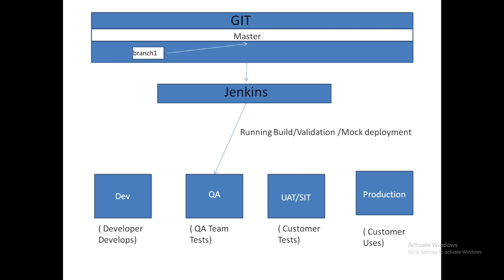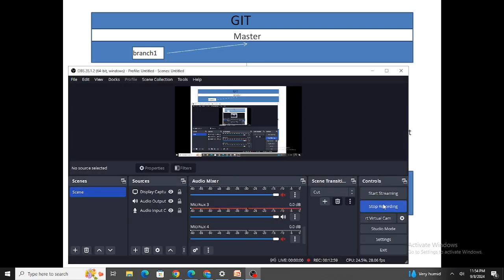This is how you build a deployment pipeline — what we call a CI/CD pipeline. This is how Git and Jenkins go hand-in-hand to handle the overall deployment and maintain version control. That was all about Jenkins and Git. If you found this video helpful, please like the video and subscribe to the channel.